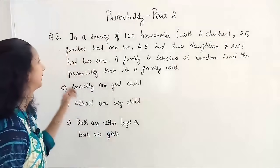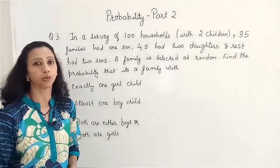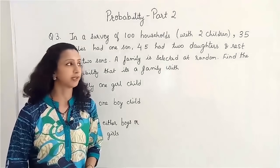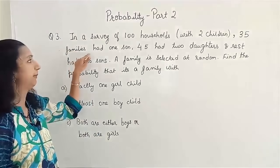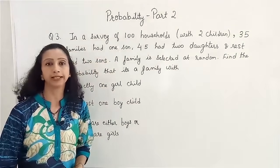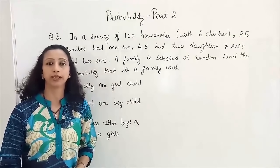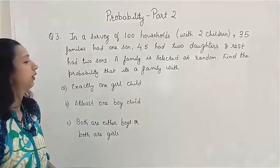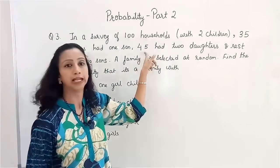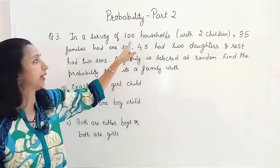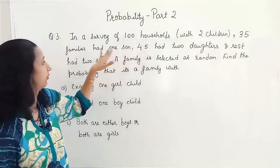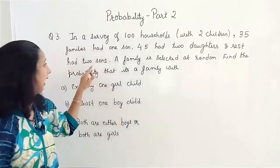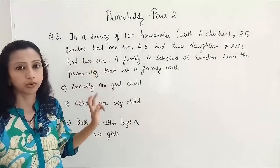In this example, there was a survey of 100 households with 2 children — every household selected had only 2 children. 35 families had 1 son (meaning 1 son and 1 daughter), 45 had 2 daughters, and the rest had 2 sons. That means 35 plus 45 gives 80, so out of 100, the remaining 20 households had 2 sons.